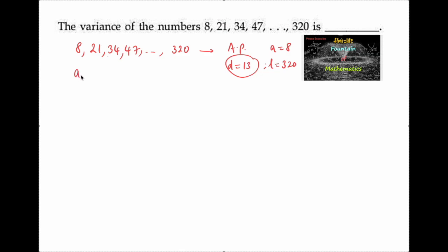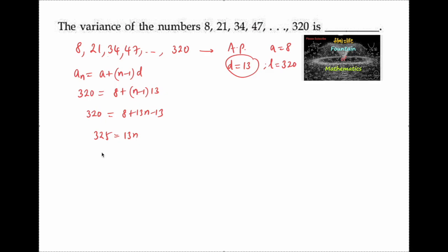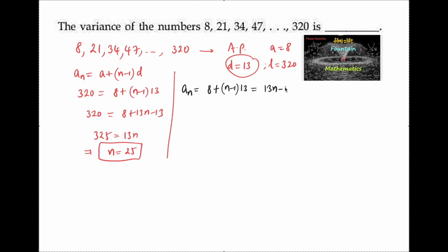The general term aₙ is equal to a plus (n minus 1) into d. Considering the last term: 320 = 8 + (n − 1) × 13, which gives 325 = 13n, so n = 25. The number of terms is 25, and the general term can also be written as aₙ = 8 + (n − 1) × 13. Since 8 − 13 = −5, this simplifies to aₙ = 13n − 5.